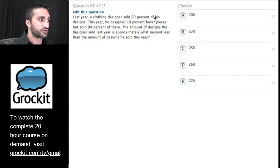So last year, a clothing designer sold 60% of his new designs. Let's say he makes 100 new designs, right? And we like using 100 on percent questions. And he sold 60% of them. So that means he sold 60. This is my little information management trick on percent questions.